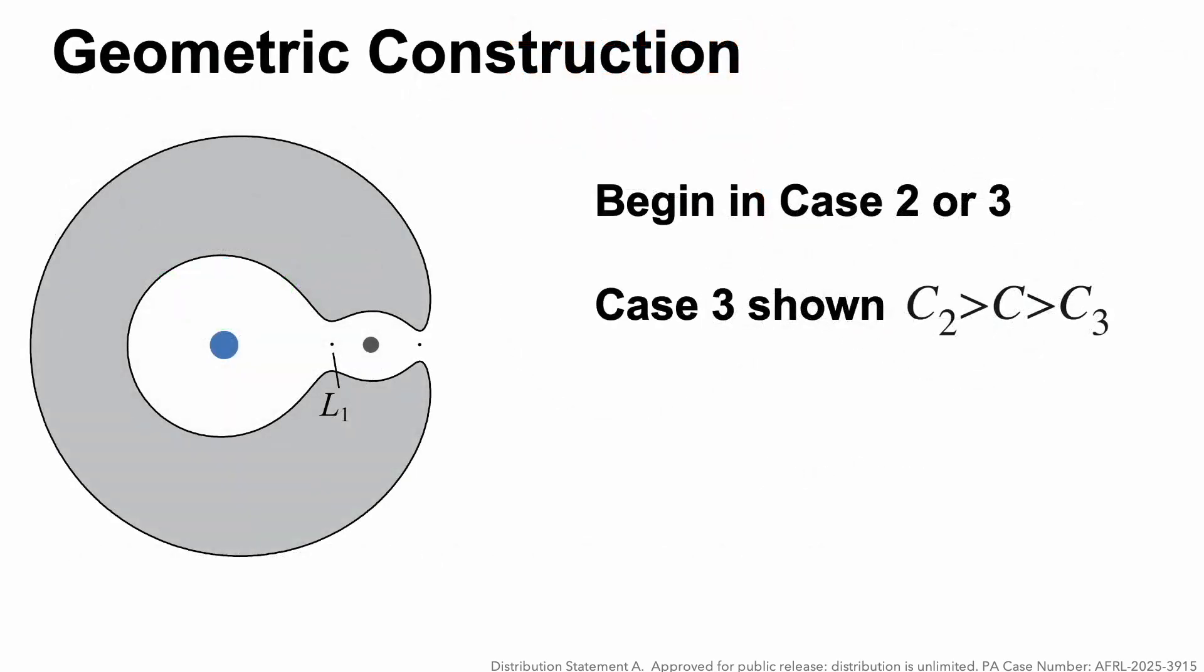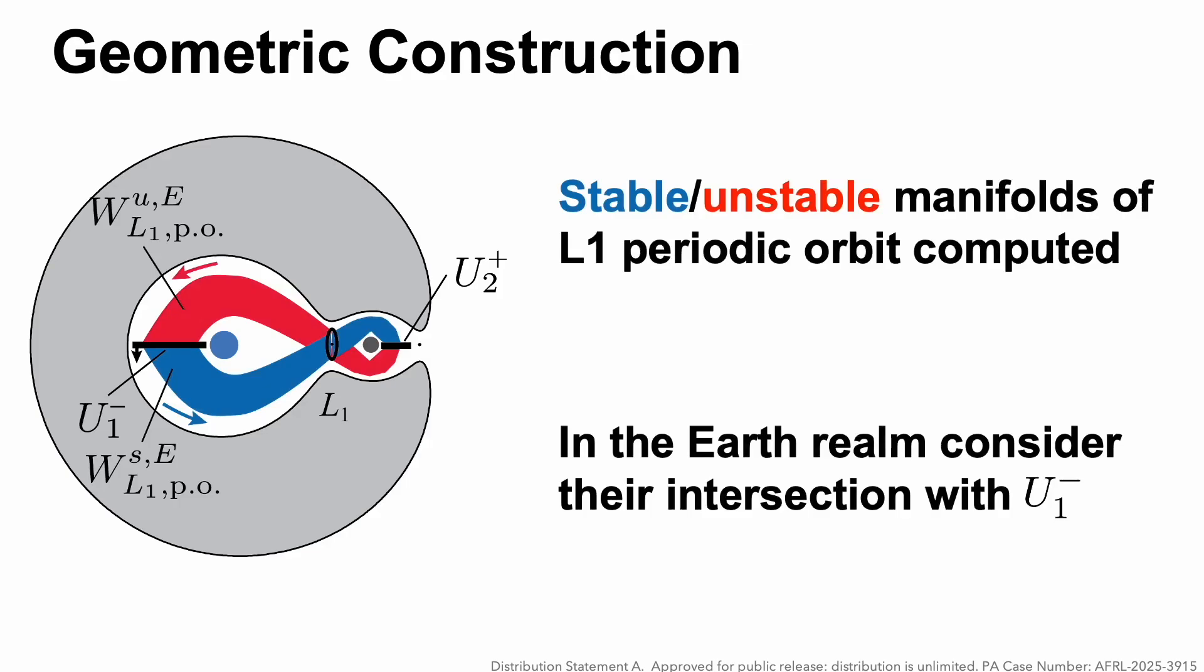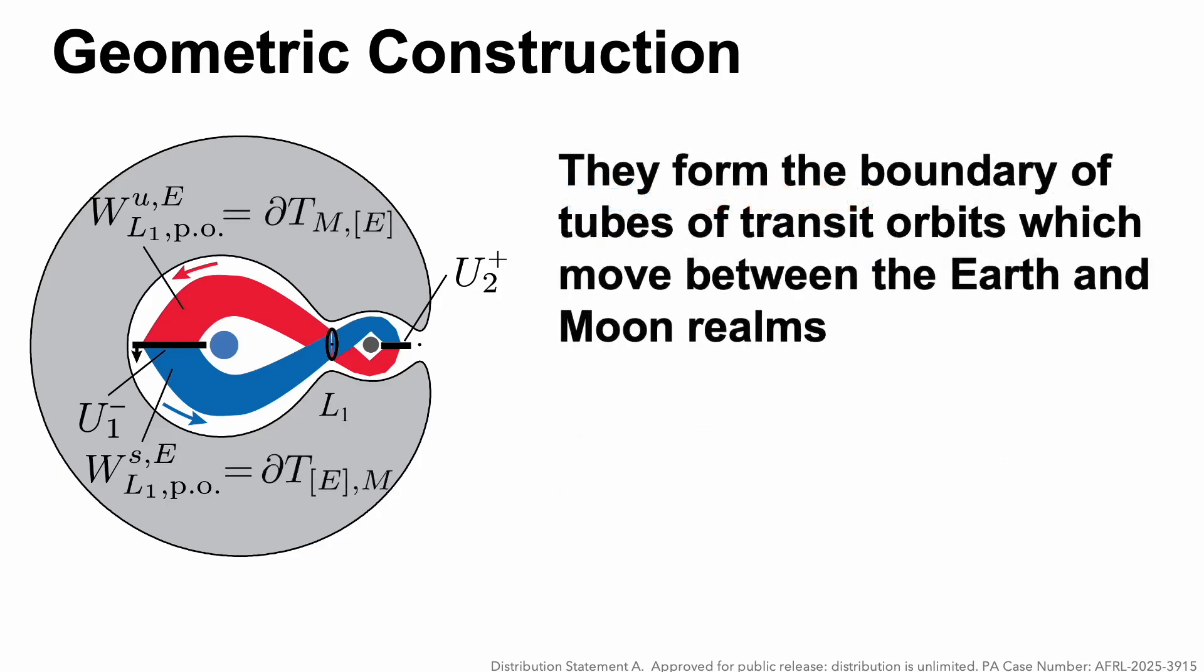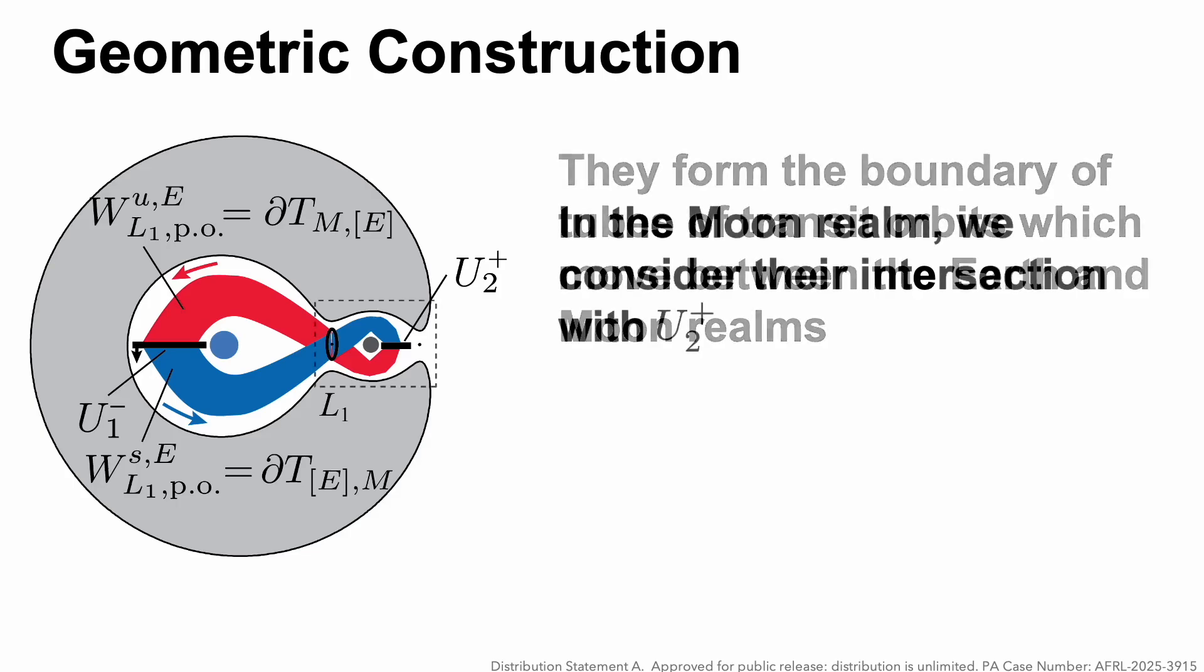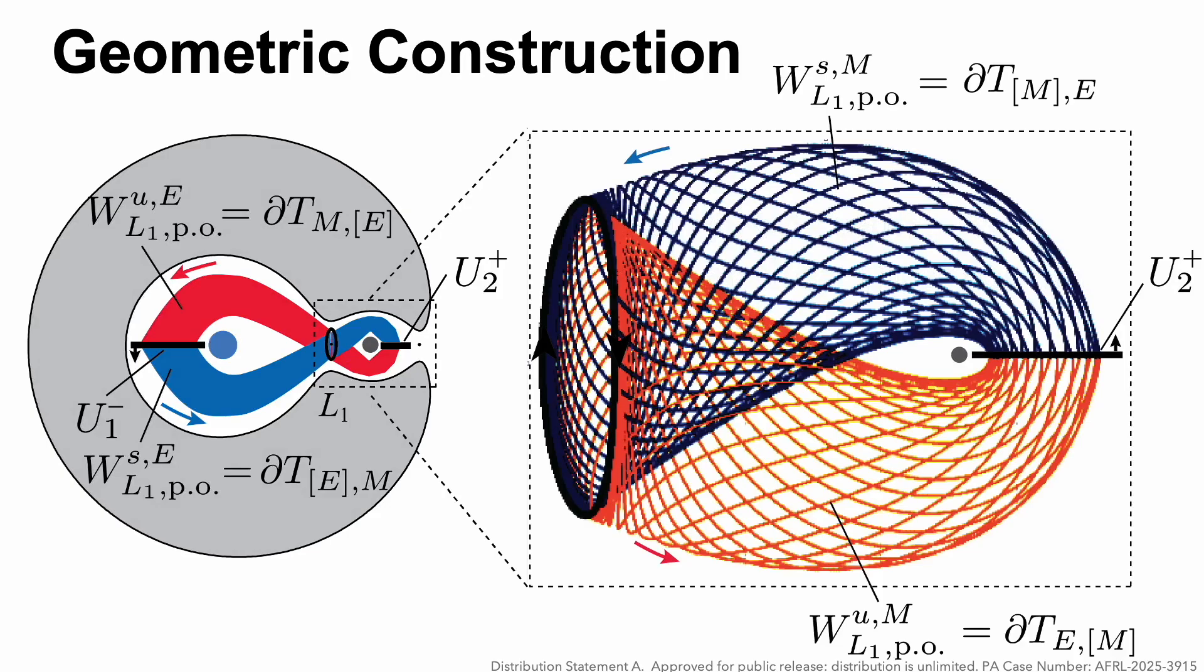Let's go through a geometric construction, beginning in case 2 or case 3. Case 3 is shown here, so there's a neck region opening up around L1 and L2, but we're just focusing on the L1 Lyapunov orbit. Here are those key Poincaré sections U1- and U2+, and here are the stable and unstable manifolds of the L1 periodic orbit that are computed. In the Earth realm, we consider their intersection with U1-. These form the boundary of solid tubes of transit orbits which move between the Earth and Moon realms.